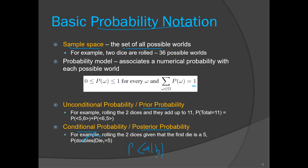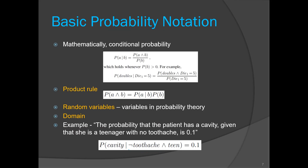B has already happened, and we are finding the probability of A given that B has already occurred. We have seen the formula: probability of A given B equals probability of A and B divided by probability of B. From that we can derive the product rule. Remember this formula because we need it in many places.